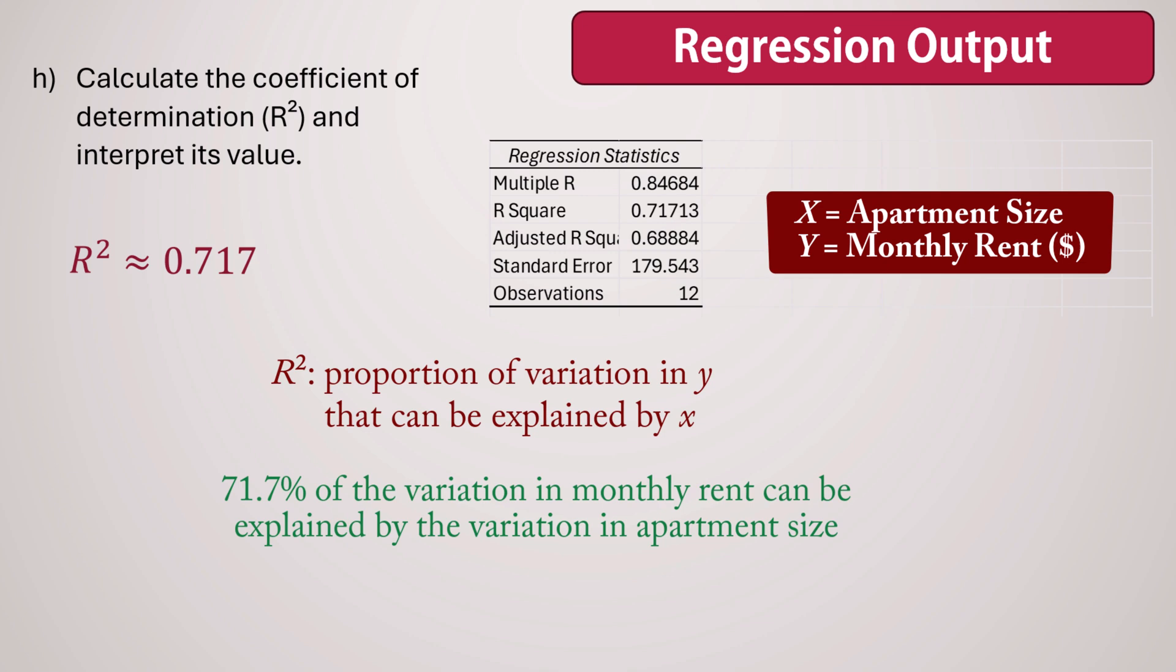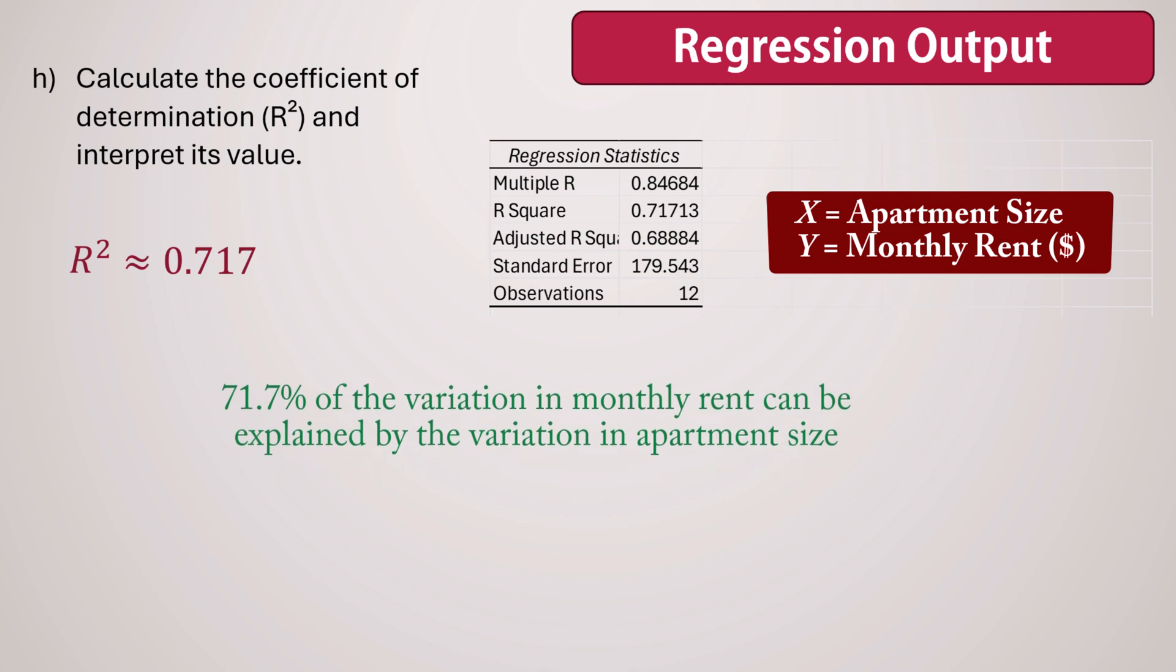In other words, knowing the size of the apartment allows us to account for about 71.7% of the differences we see in monthly rents. Since R² is close to 1, it suggests that apartment size is a useful predictor of monthly rent, and a good fit of the regression line to the data.